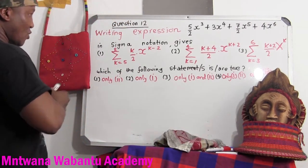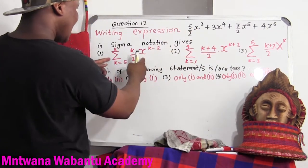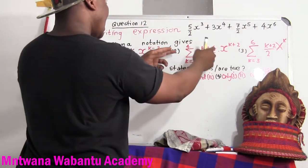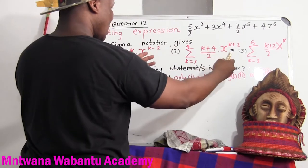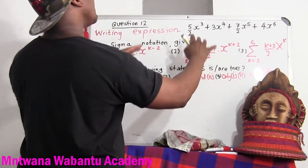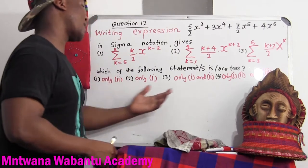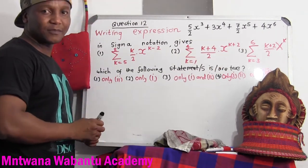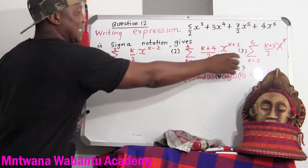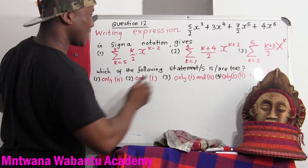I'm going to take the first option and test it to see if it gives me this expression, because there are two ways. Either you can move from here to there, or from here to here. The easy way is to move from the option to the expression. So how are we going to do it? Let me test the third one. In an exam, you can start with the first, second, or third one. I'm going with this: the value of k equals 3.